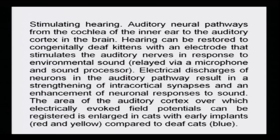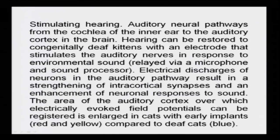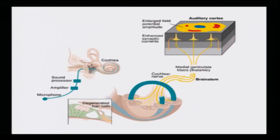Stimulating the auditory neural pathway from the cochlea of the inner ear to the auditory cortex of the brain — hearing can be restored in congenitally deaf kittens with an electrode that stimulates the auditory nerves in response to environmental sound relayed by microphone and sound processor. Electrical discharges of neurons in the auditory pathway result in a strengthening of intracortical synapses and an enhancement of the neuronal response to sound. The area of the auditory cortex over which electrically evoked field potentials can be registered is enlarged in cats with early implants (red and yellow) compared to the deaf cat (blue).